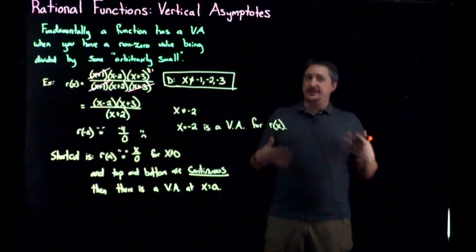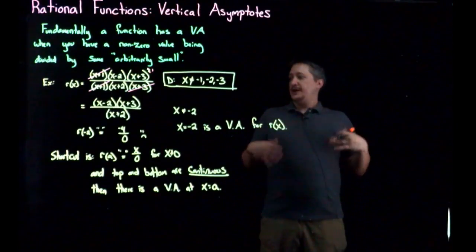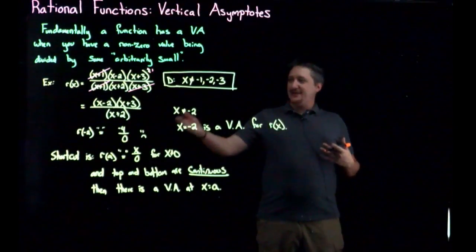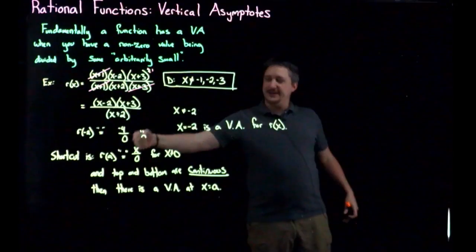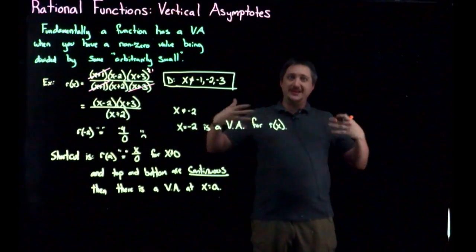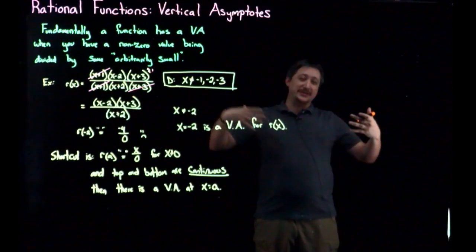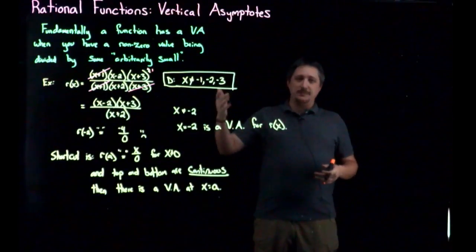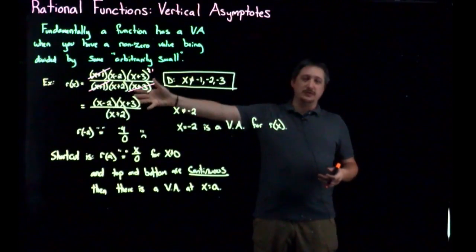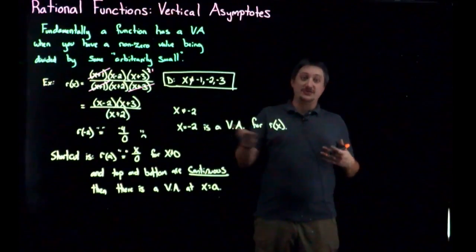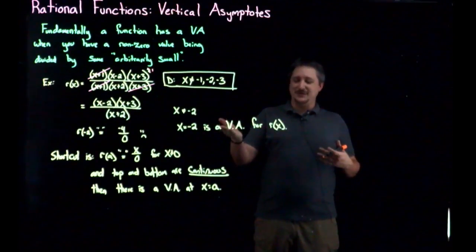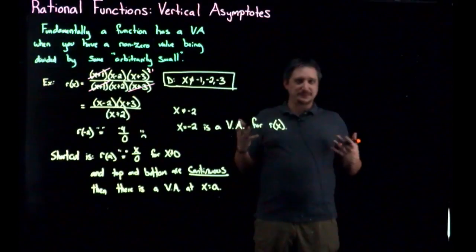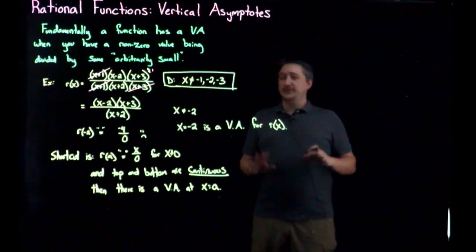And this is the case after you've simplified. So again, to be very clear, you can't actually plug in negative 2 because that's not in the domain. But it's the idea of, if you tried, you get something that isn't zero over zero, which isn't defined. But as long as the top and bottom are continuous functions, which polynomials are, that tells you that that's actually a vertical asymptote.